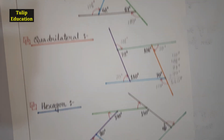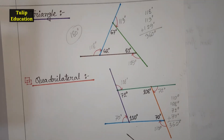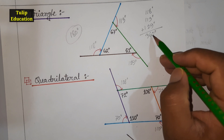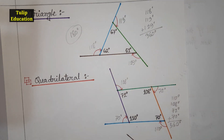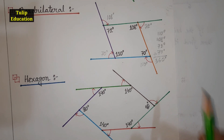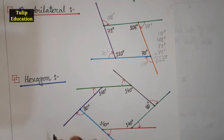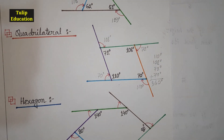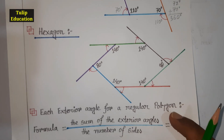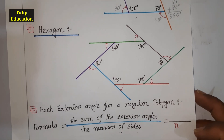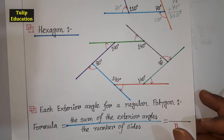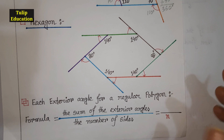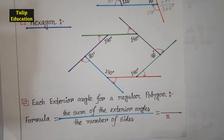So we get 360° as the sum of exterior angles from the triangle, and we also get 360° from the sum of the quadrilateral's exterior angles. Next we will try for a hexagon. A hexagon is a six-sided polygon and it has six angles, so if we extend these six sides we will get six exterior angles.